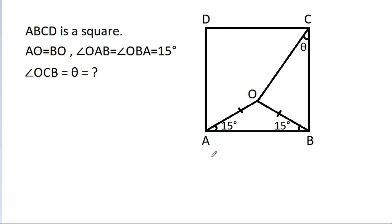In this video, we have given that ABCD is a square and AO is equal to BO, and angle OAB is equal to angle OBA, that is 15 degrees. Then we have to find the value of theta.